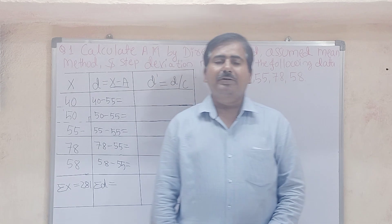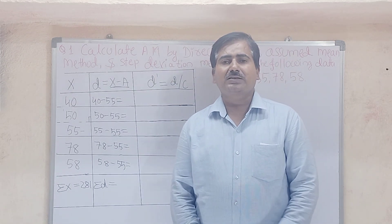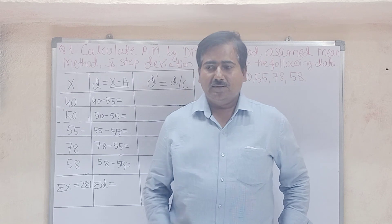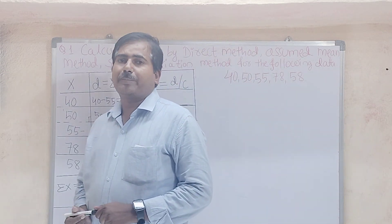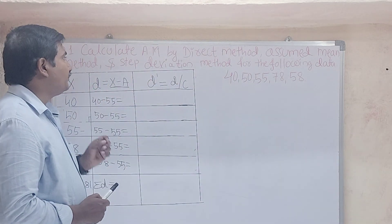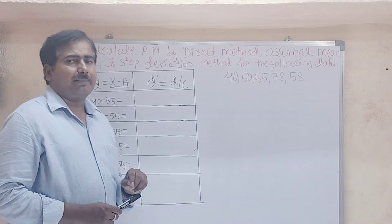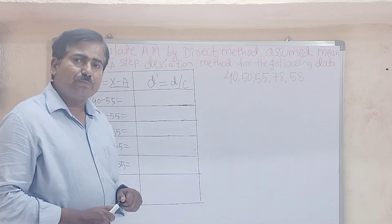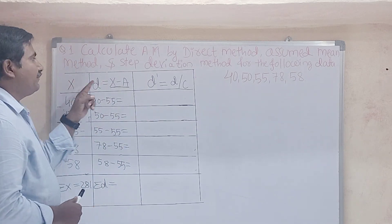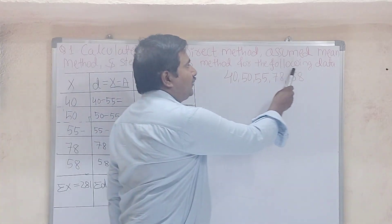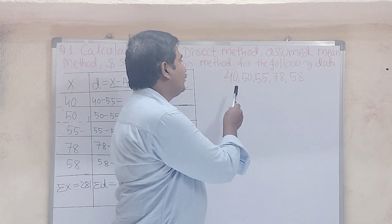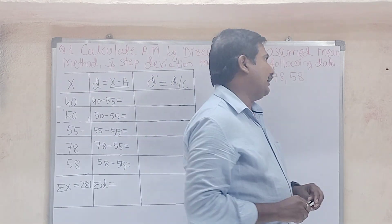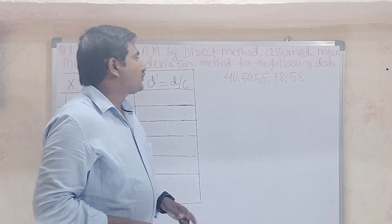Hello everyone, I am Revyas Pujari, economics lecturer. My YouTube channel is Economic Survey 1776. Today's topic is arithmetic mean — we will calculate the arithmetic mean by direct method, assuming method, and step deviation method, for the following data: 40, 50, 55, 78, and 58.